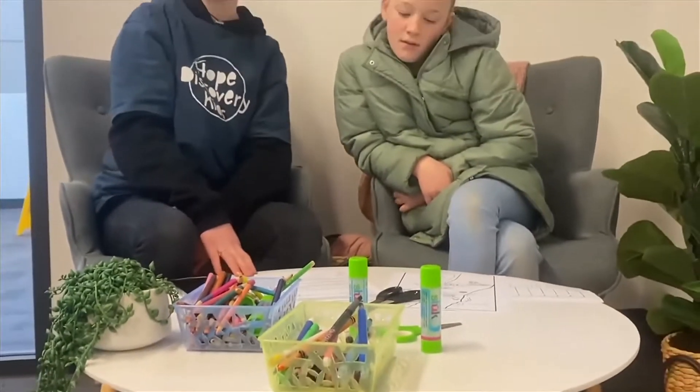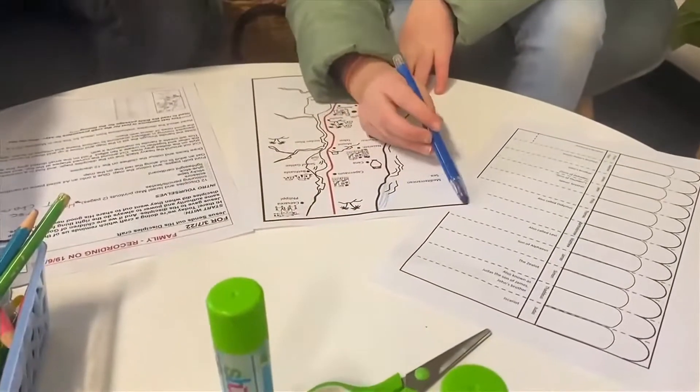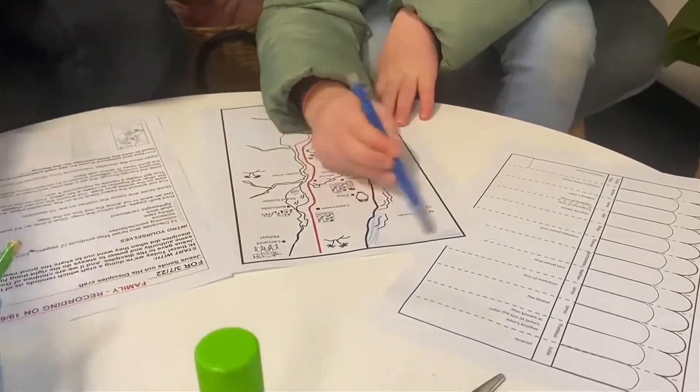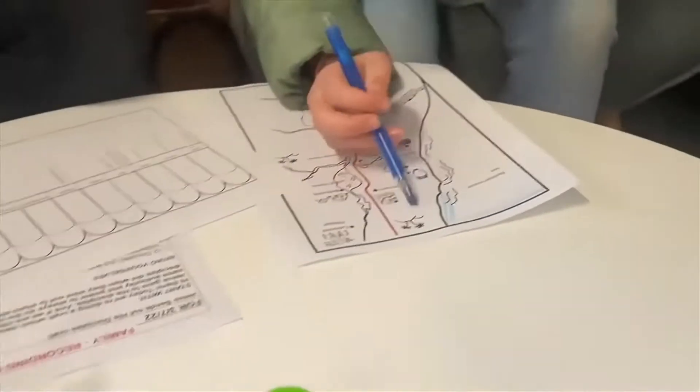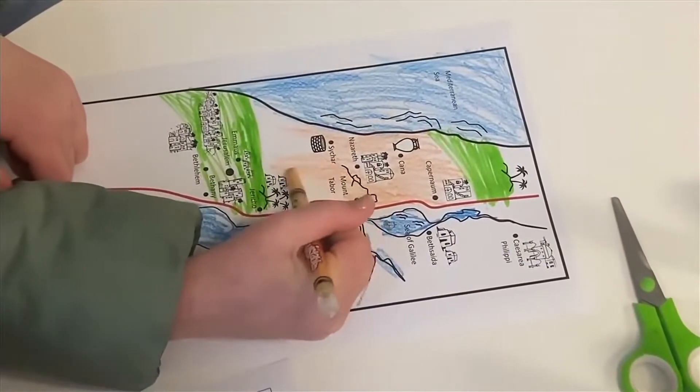You also need sticky tape to tape the disciples together to make the fan effect. Print both pages and color the map, then glue it onto an A4 size piece of cardboard. Get an adult to cut along the red lines on the map.